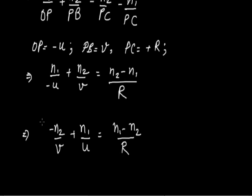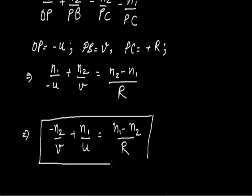This is the equation for refraction at a spherical surface. This equation is very useful when calculating the lens maker's formula. We will directly use this equation for the derivation of the lens maker's formula, which is a very important formula relating object distance, image distance, focal length, and the radii of curvatures of the lens.